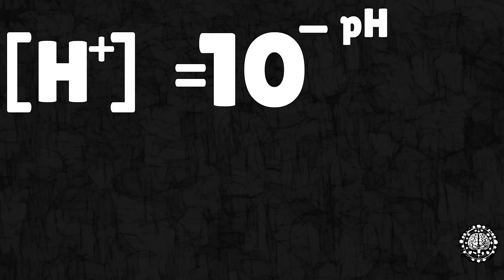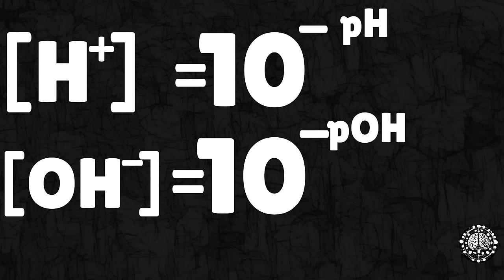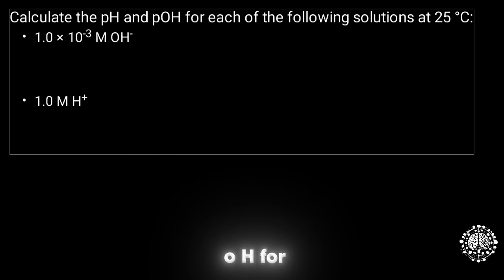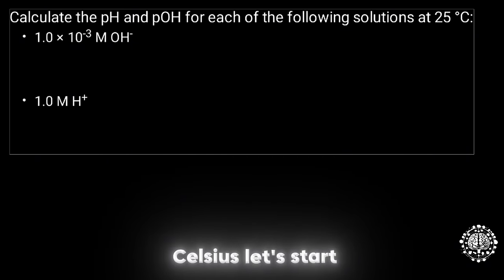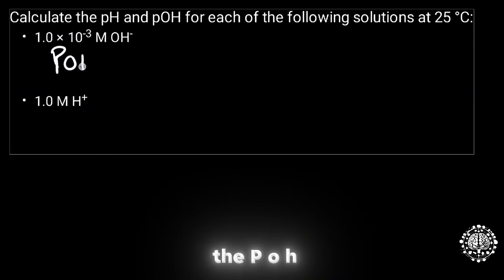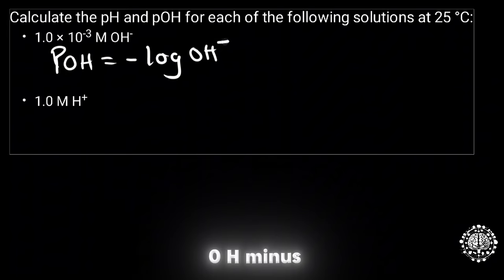If you want to get the value of the H⁺ ion, you take 10 to the power negative pH — this gives you the H⁺ ion. And if you want to get the OH⁻ ion, you take 10 to the power negative pOH — this gives you the OH⁻ ion. Now let's try this question: calculate the pH and pOH for each of the following solutions at 25 degrees Celsius. For the first one, we have 1 times 10 to the power negative 3 of OH⁻.